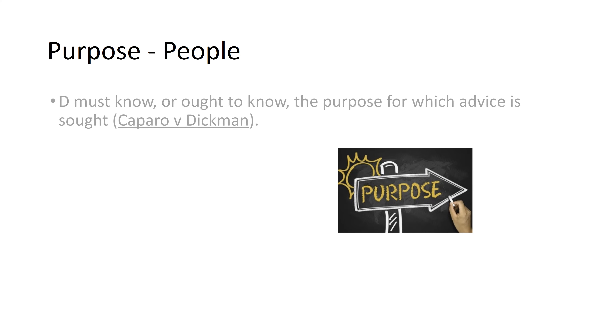The P in 'People' stands for purpose. The second element is that the defendant must know or ought to know the purpose for which the advice is sought. This comes from Caparo v Dickman. So you need to consider what is there in the scenario that shows the defendant knew why the claimant was asking for advice.